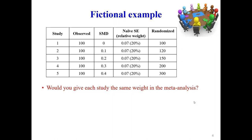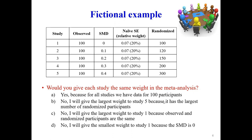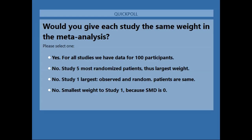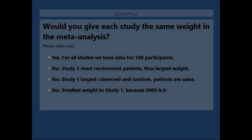The question is: would you give each study the same weight in the meta-analysis? Four possible answers: A — yes, because each study has data for 100 participants; B — give study five the largest weight because it has the most randomized participants; C — give study one the largest weight because it has no missing data; D — give the smallest weight to study one because its SMD is zero. Please take half a minute to answer the poll.